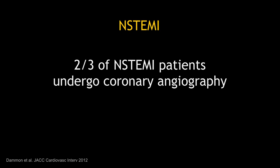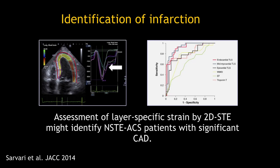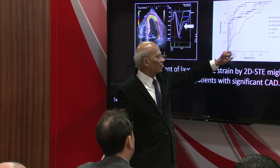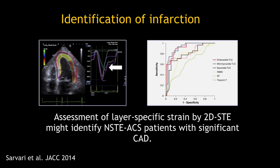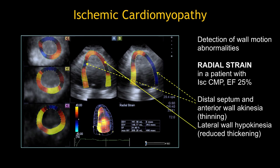Consider troponin bumps — we see them every day and often don't know whether it's an NSTEMI or real disease. Most of them — at least two thirds — end up going for coronary angiography. When you analyze different myocardial layers using a layer-specific speckle tracking method, compared to ejection fraction and wall motion scoring index, the layer-specific speckle data appear to be useful in the recognition of infarction.